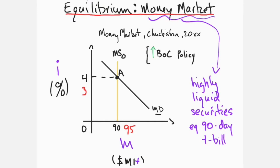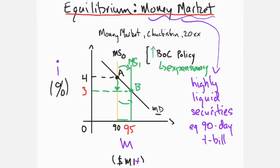Should the Bank of Canada increase the supply of money to 95 units — a shift from MS0 to MS1, an expansionary policy — interest rates must fall from four to three percent, as given by the new equilibrium point B, for the additional five units of M1+ to be held by actors. Conversely, interest rates must increase to ensure actors transfer more money to interest-bearing financial instruments as money supply decreases from 95 to 90 units.